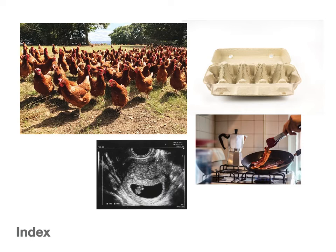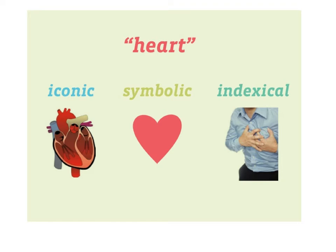Here's an example for heart. An icon is an actual, literal-looking heart. The symbol is what we've come to associate with Valentine's Day. An indexical sign is someone having a heart attack. So semiotics helps us expand our scope of thinking and representation.